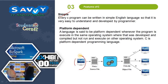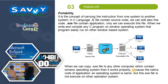C is a platform-dependent programming language. When we develop a program in Windows using C language, after compiling it generates a .obj file. This .obj file can only run or be executed on Windows, not on other platforms — that is called platform dependent. Portability is the concept of carrying instructions from one system to another. In C, the .c file contains source code which we can edit, and the .exe file contains the application. When we write and compile a C program on Windows, the .exe file can run on other Windows-based systems because the native code of the application and operating system is the same. But this .exe file cannot be executed on other operating systems.